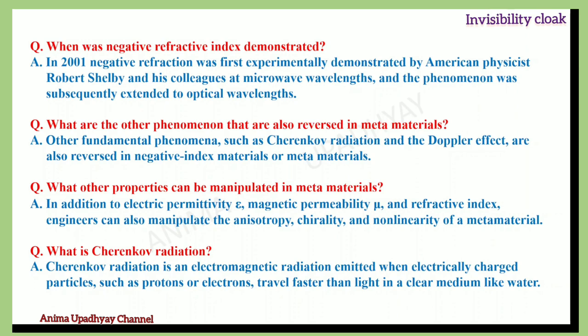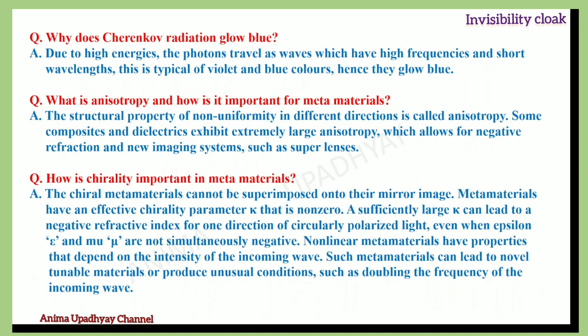What other properties can be manipulated in metamaterials? In addition to electric permittivity epsilon and magnetic permeability mu, as well as the refractive index, engineers can also manipulate anisotropy, chirality, and non-linearity. What is Cherenkov radiation? Cherenkov radiation is electromagnetic radiation emitted when electrically charged particles such as protons or electrons travel faster than light in a clear medium like water. It glows blue because the photons travel as waves with high frequencies and short wavelengths, typical of violet and blue colors.